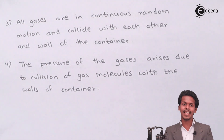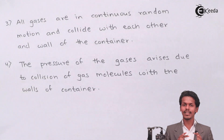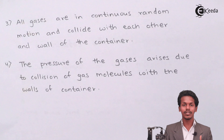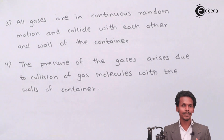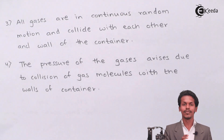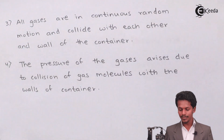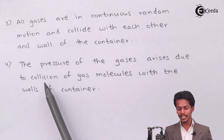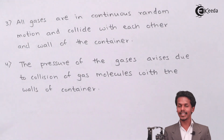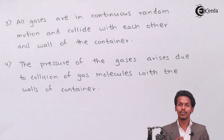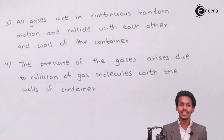The fourth postulate is that the pressure of a gas arises due to the collision of gas molecules with the walls of the container. For example, when a gas is filled in a balloon, the balloon expands because the pressure increases. The random motion of gas molecules maintains overall pressure in the balloon, and the pressure is maintained due to these randomly colliding molecules.